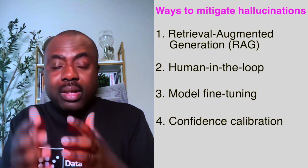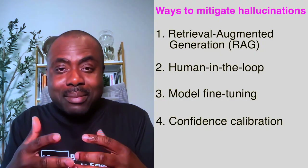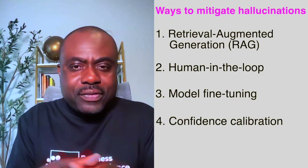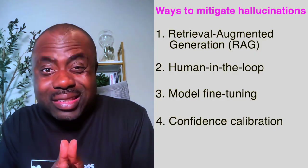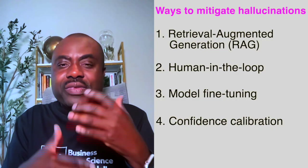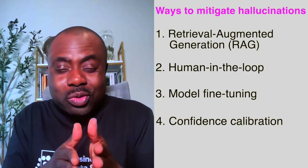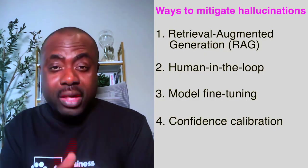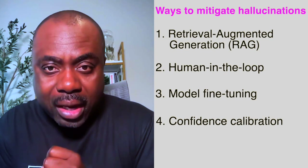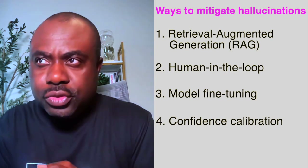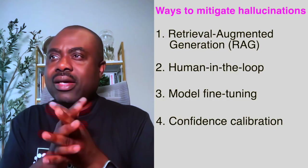Finally, you can mitigate hallucination by doing what we call confidence calibration. You can build a model such that every output includes a confidence coefficient. If the model is giving an answer it is only 20% confident about, you will know before you use it. Letting the model express the uncertainty of its answers is also very helpful. So the four ways are: RAG, Human-in-the-Loop, model fine-tuning, and confidence calibration.